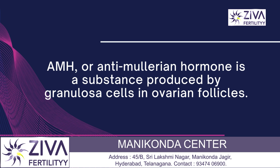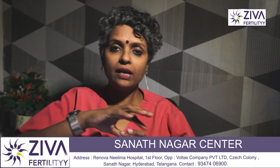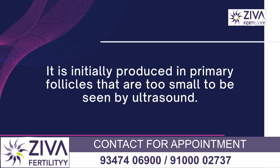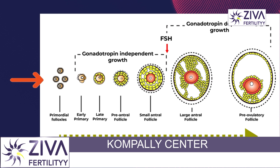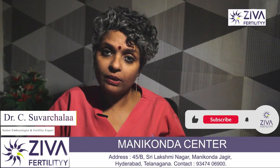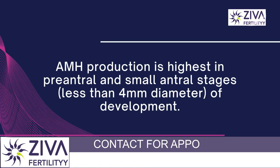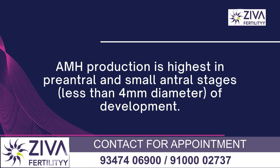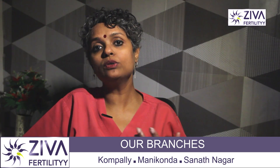AMH, or anti-mullerian hormone, is a substance produced by the granulosa cells in the follicles. Every follicle has a lot of cells inside it, within which there is an egg. These granulosa cells produce the AMH hormone. It is first made in the primary follicles which are advancing from the primordial follicle stage — when they are in a sleeping state. When they advance to the primary follicle stage, that is when they begin to release AMH. At this stage, the follicles are microscopic and cannot be seen on ultrasound. AMH production is highest when the follicles are in pre-antral or small antral stages, meaning they are less than 4mm in diameter.